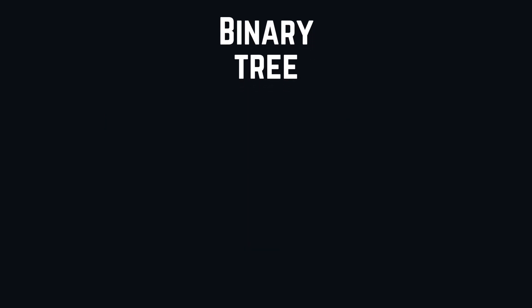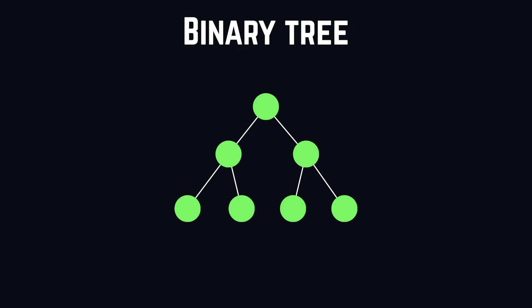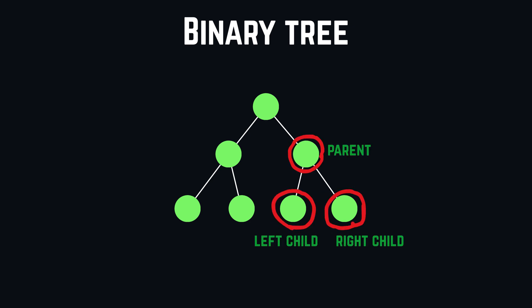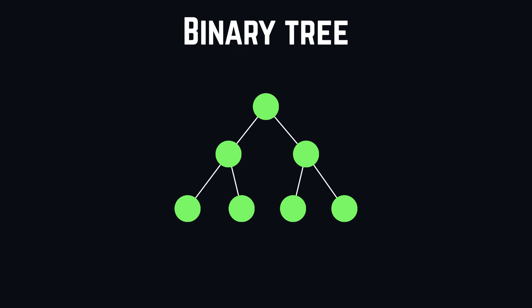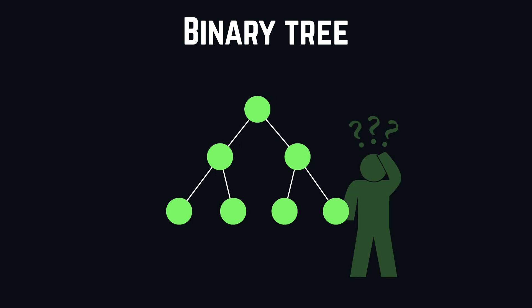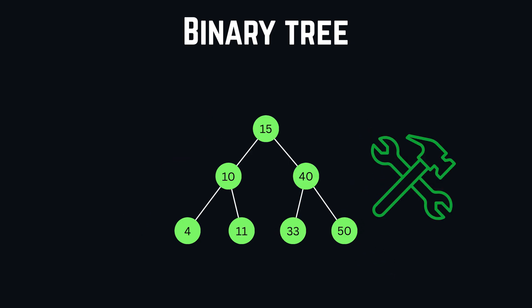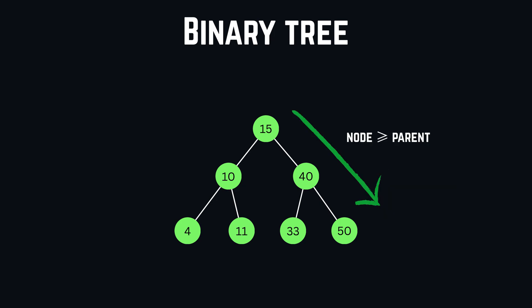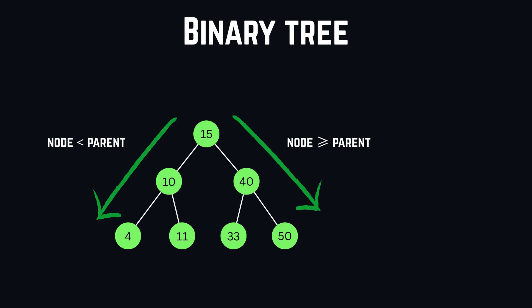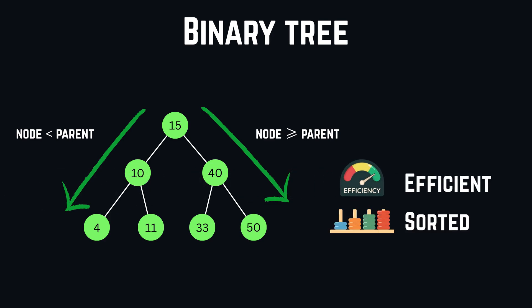Then let's explore binary trees. A binary tree is a data structure in which nodes usually have two children referred to as left and right child. These children refer to the node above them as the parent. The node at the very top with no parent is referred to as the root. Each node contains data, and based on this data we construct our binary tree by placing nodes that are greater than or equal to the parent on the right and smaller elements on the left. With this property, we've created a data structure that is efficient and maintains a sorted system.